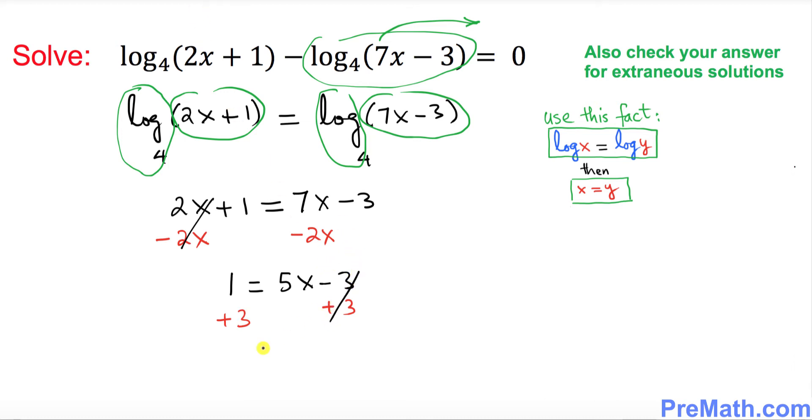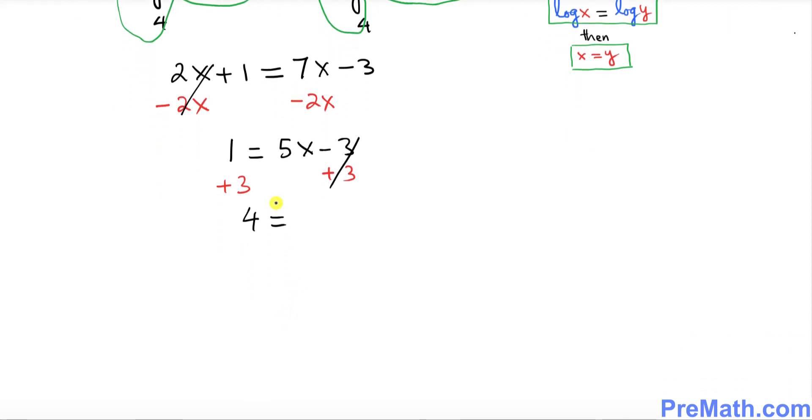So simply we got 4 equal to 5x. So I want you to divide by 5, so x turns out to be 4 over 5.